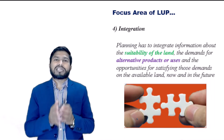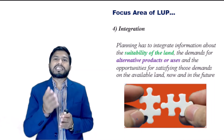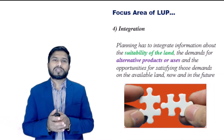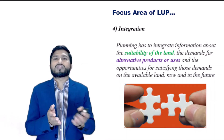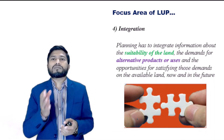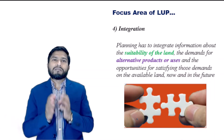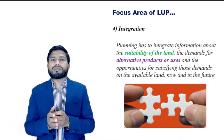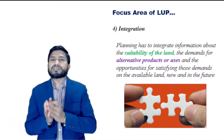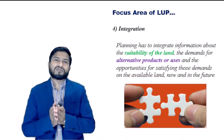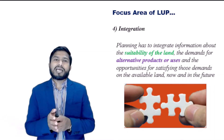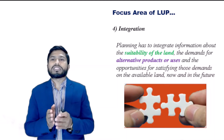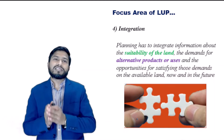The fourth and final focus area of land use planning is integration. A mistake in earlier times was to focus too narrowly on the use of land resources. Good agricultural land is usually also suitable for other competing uses. Land use decisions are not made just on the basis of land suitability, but also according to the demand for products and the extent to which the use of a particular area is critical for a particular purpose. Planning has to integrate information about the suitability of land, the demand for products, and the opportunities for satisfying those demands on the available land now and in the near future.